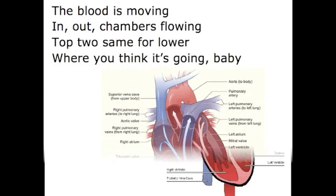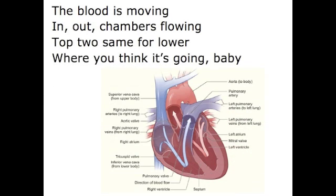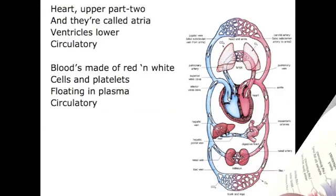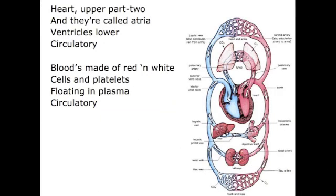Flat flat is moving in and out, chambers flowing — top two same for lower. Upper part two and they're called atrium, and trickles lower. Circulatory — blocks made of red and white cells and platelets.